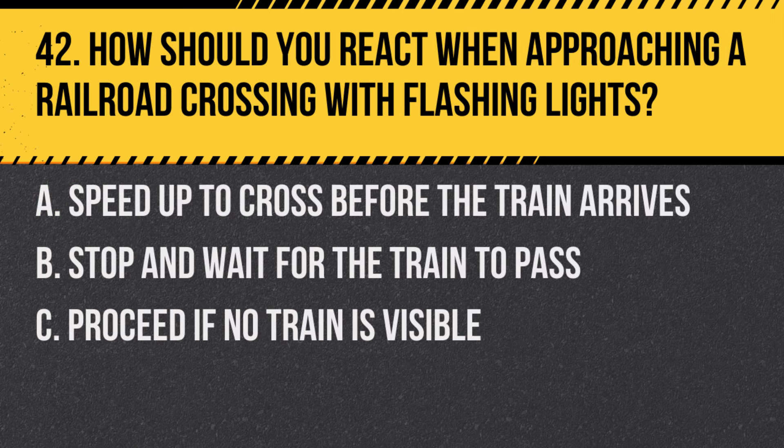Question 42: How should you react when approaching a railroad crossing with flashing lights? A. Speed up to cross before the train arrives. B. Stop and wait for the train to pass. C. Proceed if no train is visible. Answer: B. Stop and wait for the train to pass. When approaching a railroad crossing with flashing lights, stop and wait until the lights stop flashing and it is safe to proceed.